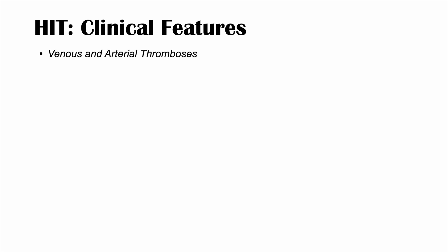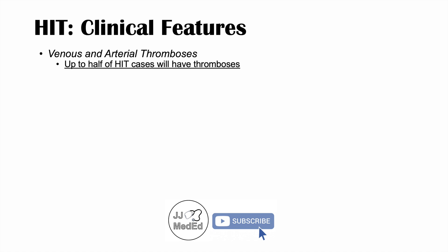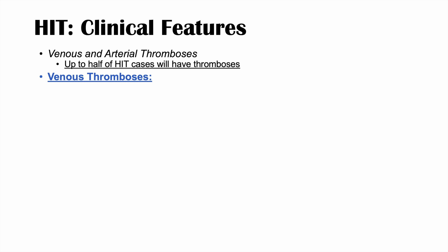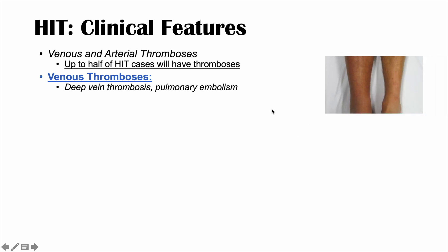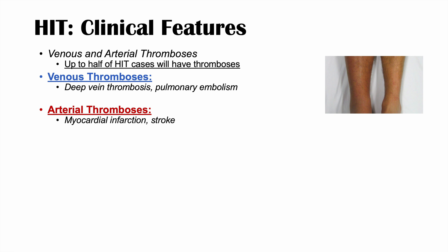The clinical features of HIT type 2 include both venous and arterial thromboses. Up to half of HIT cases will have clots or thromboses. For venous thromboses, we see deep vein thrombosis and pulmonary embolism — you may see an asymmetric leg with a DVT. Arterial thromboses can be devastating, including myocardial infarction. We don't see this with HIT type 1, but we do with type 2 due to activation of the coagulation cascade.